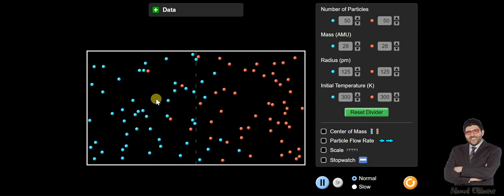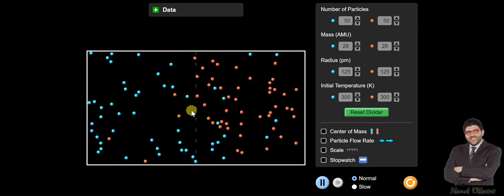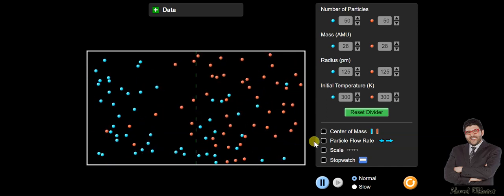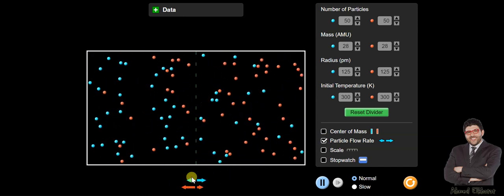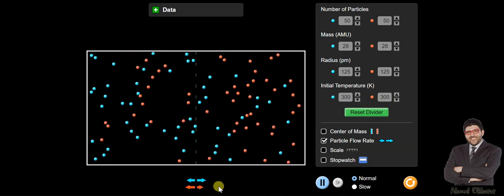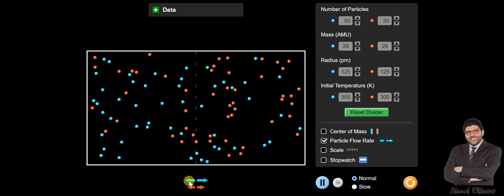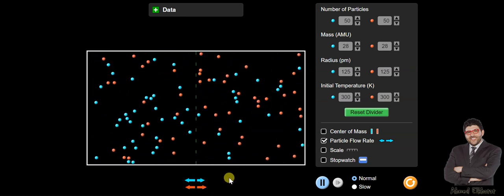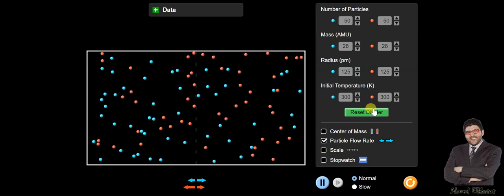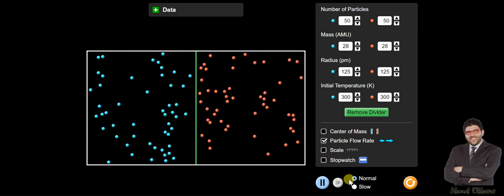As you can see, both diffuse into the other case. So let's see the flux. As you can see, the net flux is the same. Here, same flux from the blue particles equals the red particles and vice versa. So now let's put the divider again and let's change the condition.